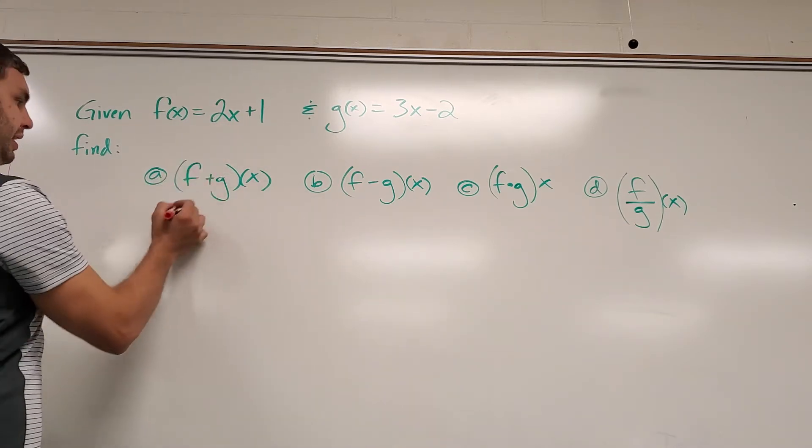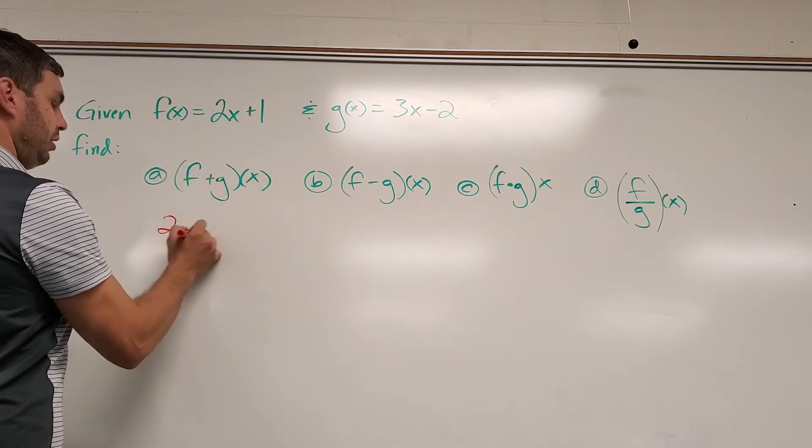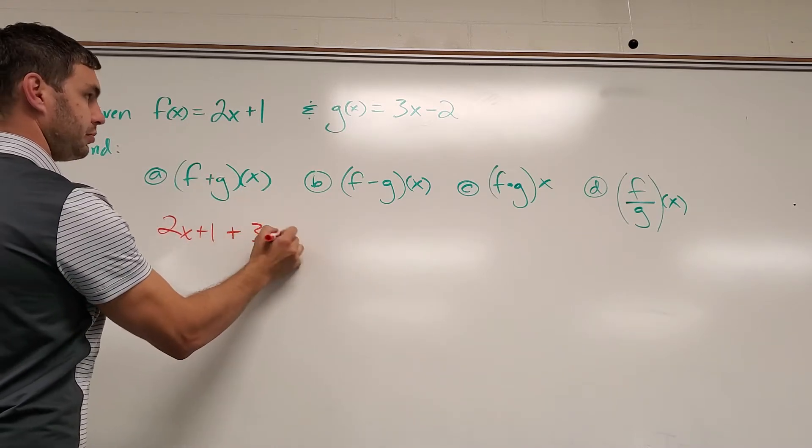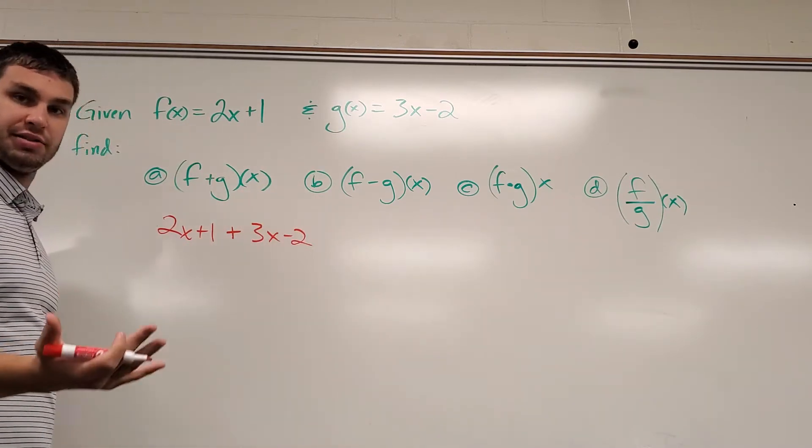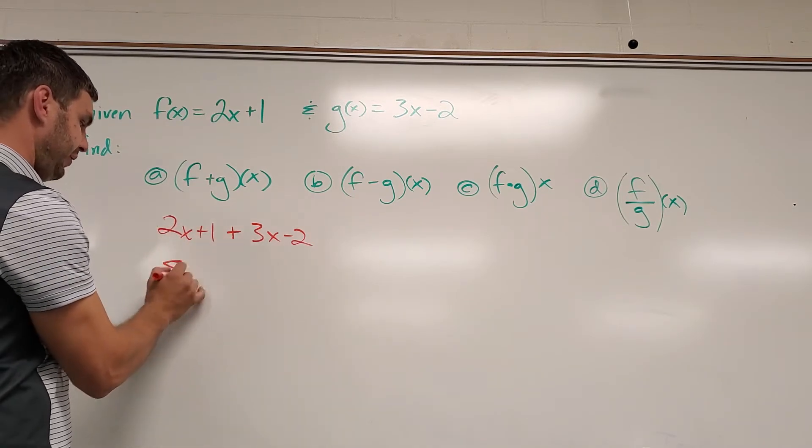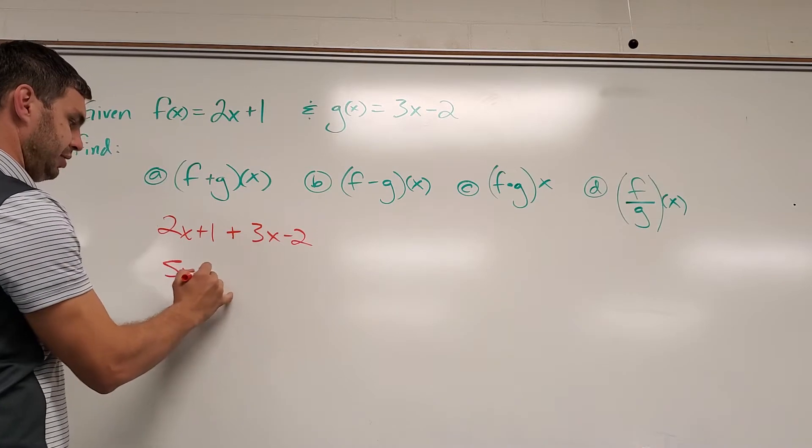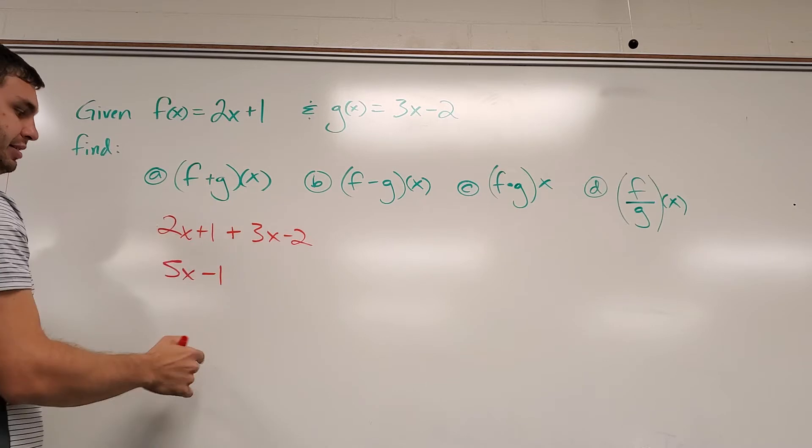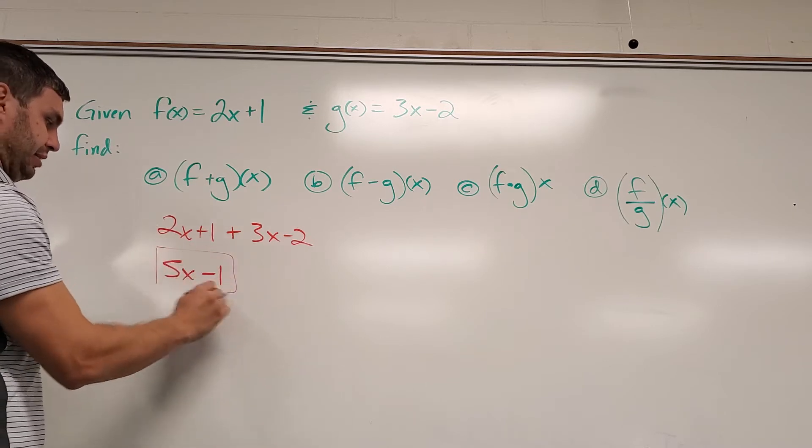What we're going to do is take f of x, 2x plus 1, and add it to g of x, so plus 3x minus 2. Then we can simplify as we see fit. 2x plus 3x is 5x, 1 minus 2 is negative 1. So f plus g of x would be 5x minus 1.